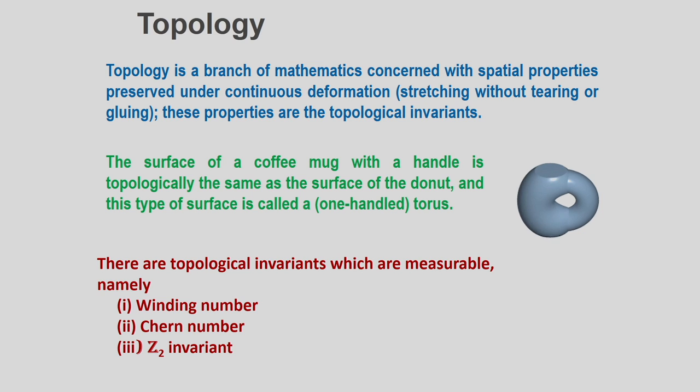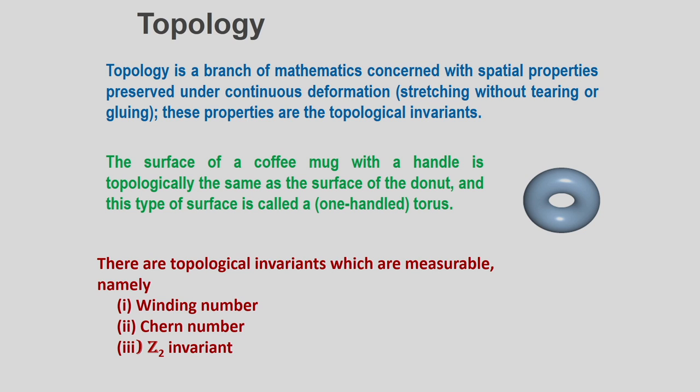These topological invariants — called the genus, as we will see in the next slides — have analogs in condensed matter physics. We will be talking about topological invariants that are measurable or can be computed from bulk properties of the material. These are called the winding number, the Chern number, the Z2 invariant, and so on — there is a whole classification.